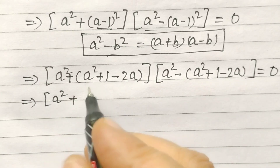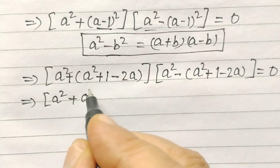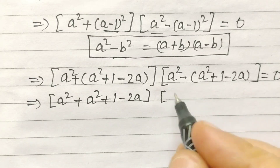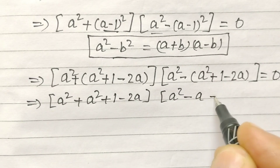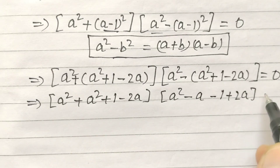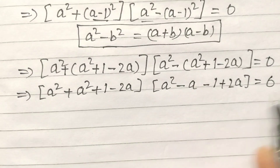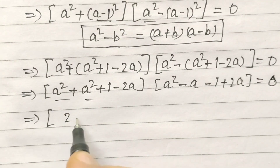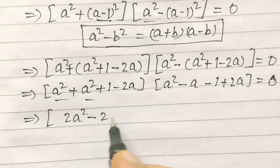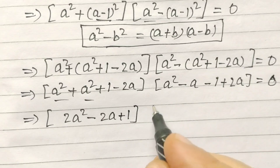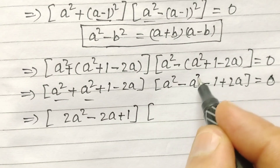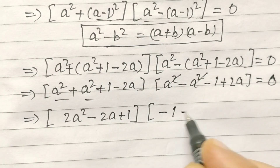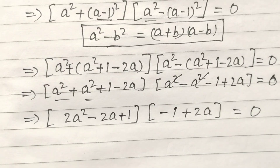Expanding: the first factor is A² + A² + 1 − 2A, giving 2A² − 2A + 1. For the second factor: A² minus A² minus 1 plus 2A — the A² terms cancel, leaving minus 1 plus 2A equals 0.